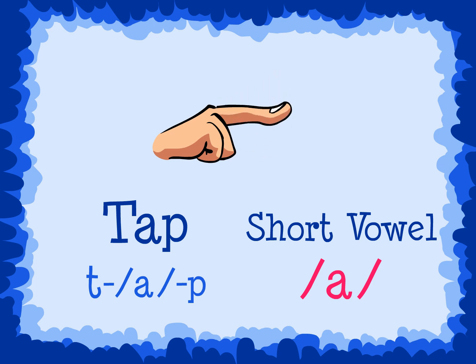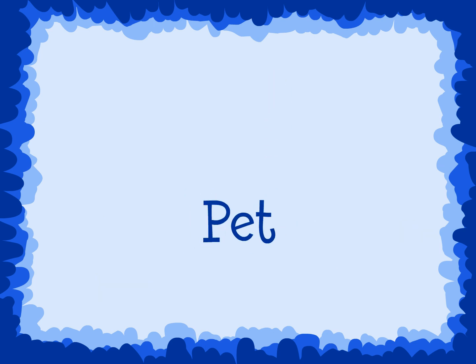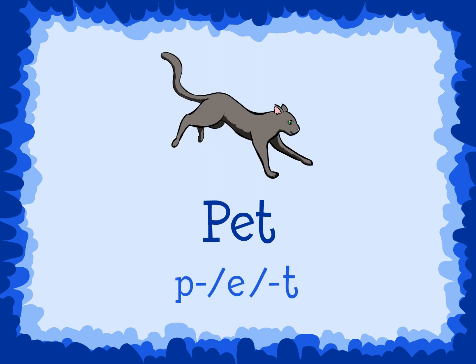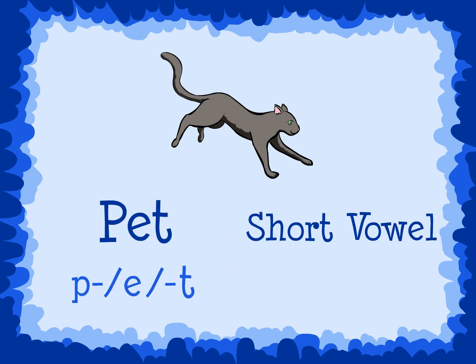Another example is the word 'pet.' The word 'pet' is spelled P, E, T, but we say P, E, T. The short E sound, E, is said in this word.